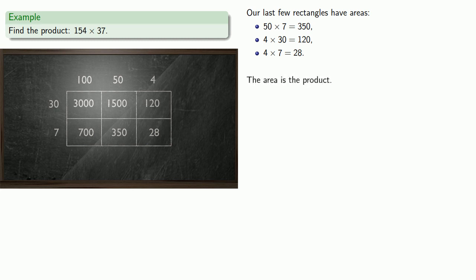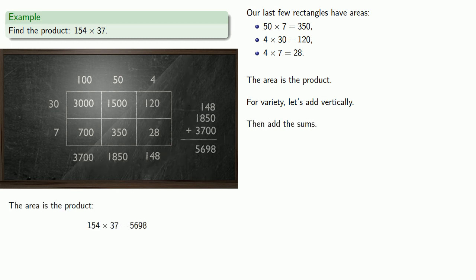And the area is the product. For a little bit of variety, let's add our partial sums vertically. So we'll add 3,000 plus 700. We'll add 1,500 plus 350. And we'll add 120 plus 28. And then we'll add our areas together to get our final answer.